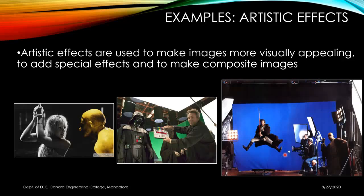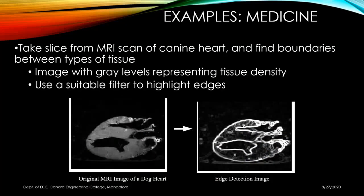Another important application is in medicine. In this example, a slice from an MRI scan of a dog's heart is used to find boundaries between types of tissues, determining whether the tissue is damaged. Using suitable filters to highlight edges, we can identify whether there is a tumor or damaged tissue. DIP techniques are used extensively in the medical field.